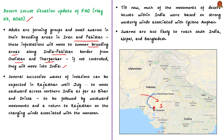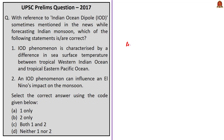India is facing a severe locust attack. Several successive waves of invasions can be expected in Rajasthan until the month of July. These locust swarms may move eastward across north India as far as Bihar and Odisha. This is expected to be followed by westward movements and a return to Rajasthan once the winds associated with the monsoon change direction. Swarms are less likely to reach south India, Nepal, and Bangladesh. To summarize, we have seen the reasons for the desert locust surge in India with a main focus on the climate link.